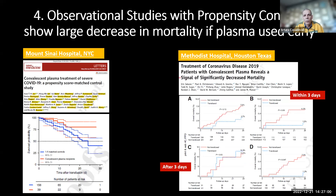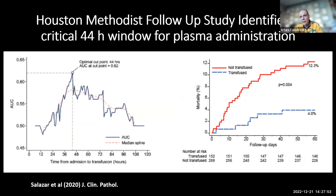Observational studies also became available in 2020. If you treat people before they get intubated, there was a difference in mortality. If you treat people who are already intubated, no difference — no surprise, because what puts you in the ICU is inflammation, and we don't expect antibody to reverse inflammation. A very important study by Jim Moser and Eric Salazar at Methodist showed two curves: within three days of admission the curves were quite separate, after three days the same result. They identified a critical 44-hour window for plasma administration. Most clinical trials published in 2021 gave antibody in many cases after that 44-hour window.